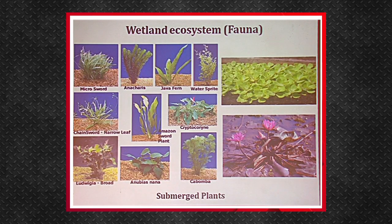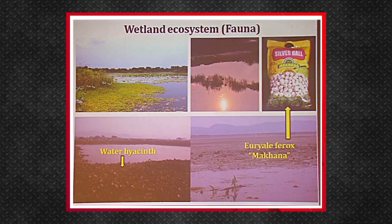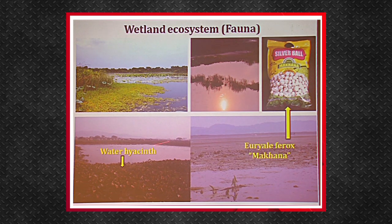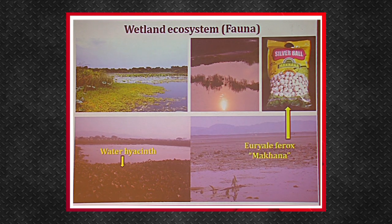Here are some examples of submerged plants. Different types of floating plants are also found — this is the water lily, very common in the wetlands of Assam. Euryale ferox, locally called Mokona, is a floating plant whose leaves resemble lotus; its seeds are extracted and sold in markets across the country. Water hyacinth, however, now plays an adverse role in wetland productivity, as it does not allow sunlight to penetrate to the bottom, thereby decreasing the productivity of fish and other aquatic life to a great extent.